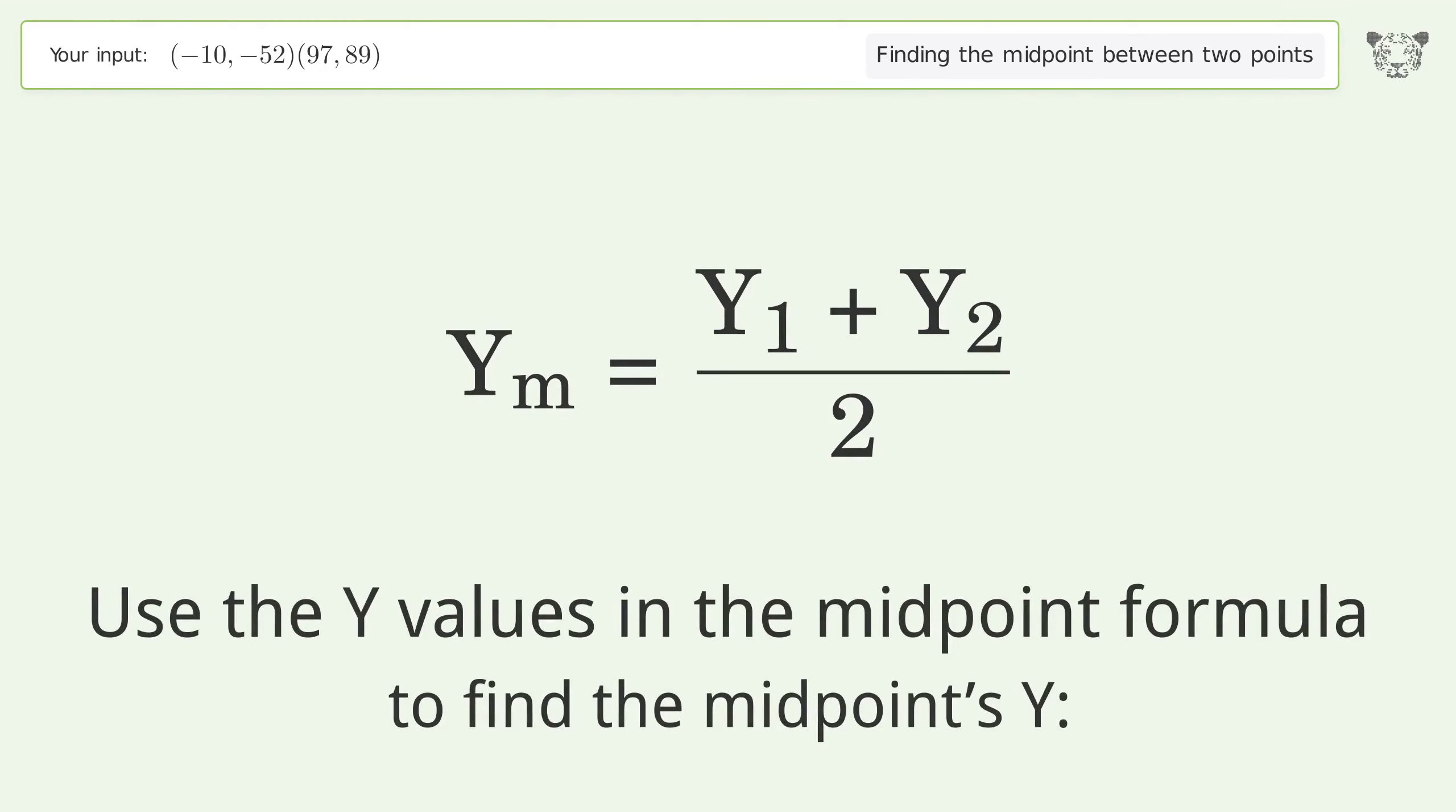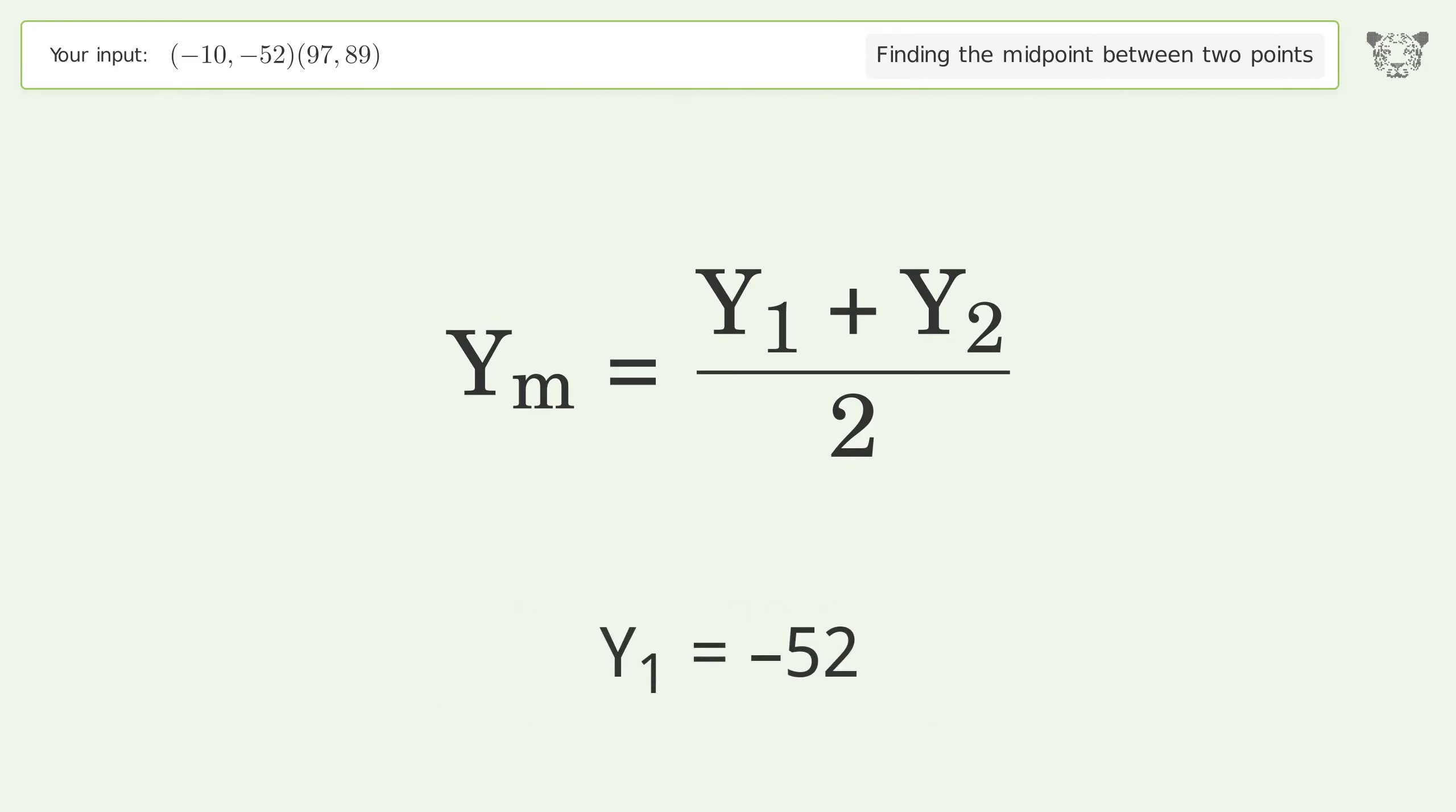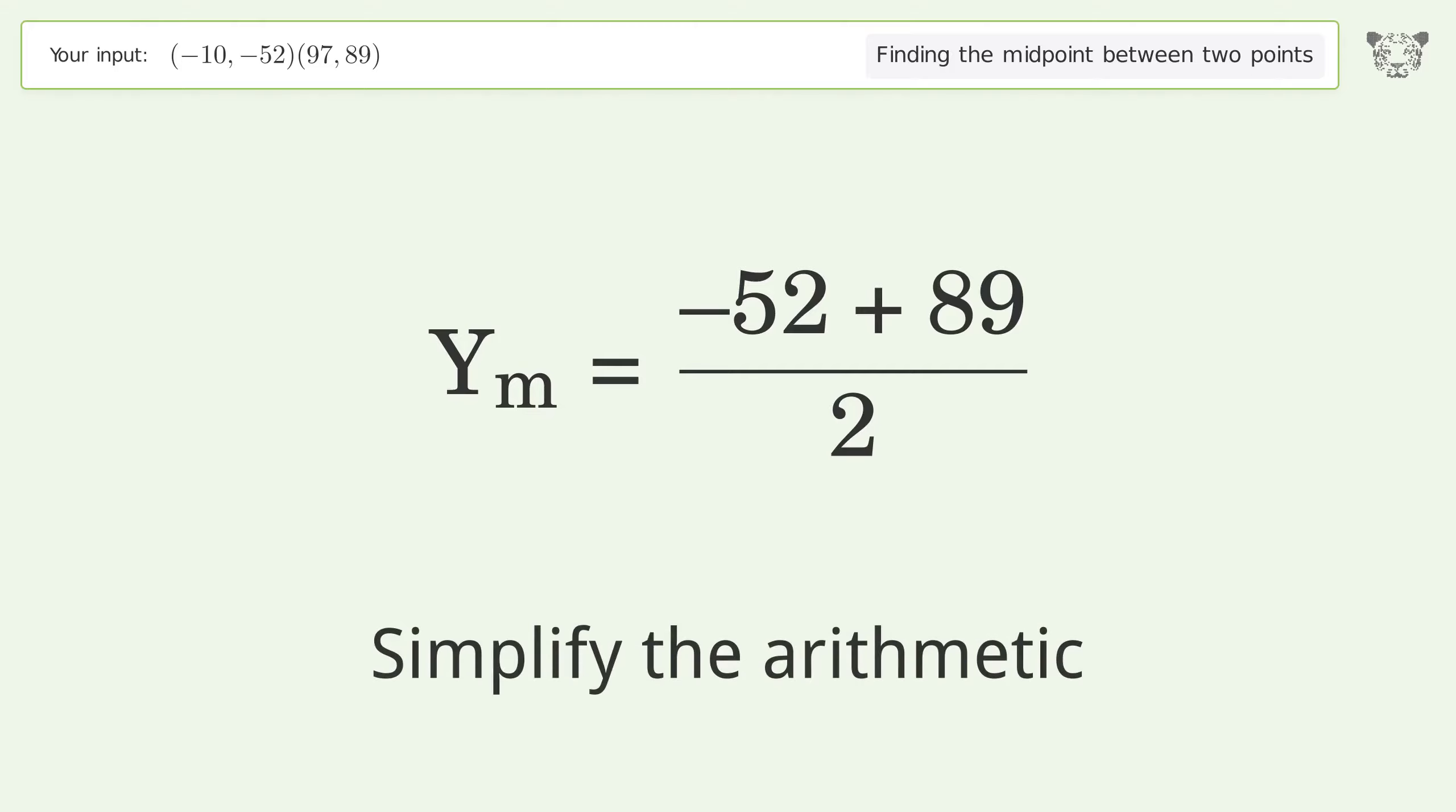Use the y values in the midpoint formula to find the midpoint's y-coordinate. y1 = -52, y2 = 89. Simplify the arithmetic.